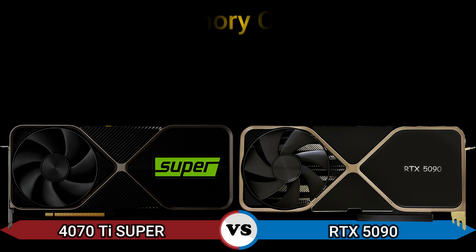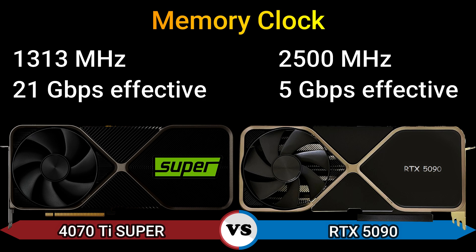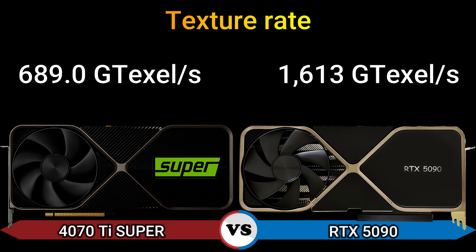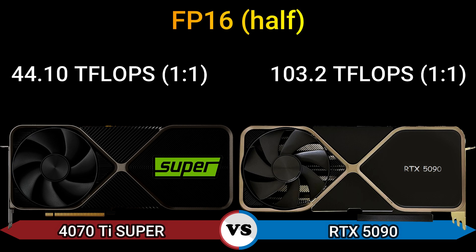Memory clock: 1330 MHz, 21 GB/s effective, and 2500 MHz, 5 GB/s effective. Pixel rate: 250.6 Gpixel/s and 483.8 Gpixel/s. Texture rate: 689.0 GT/s and 1613 GT/s.